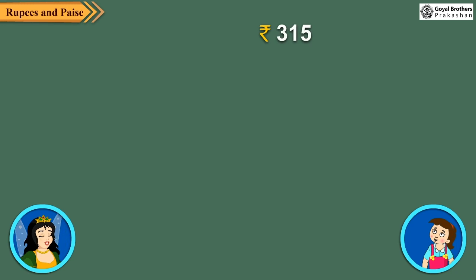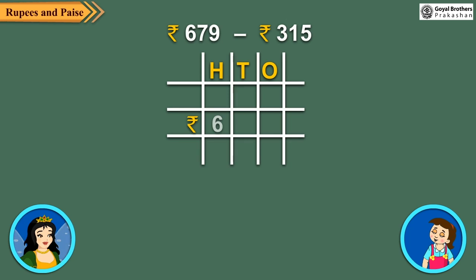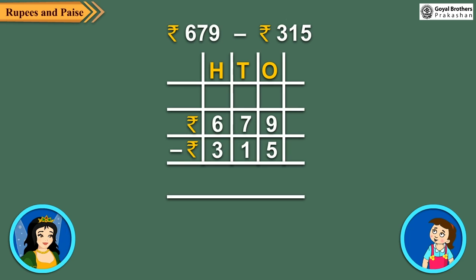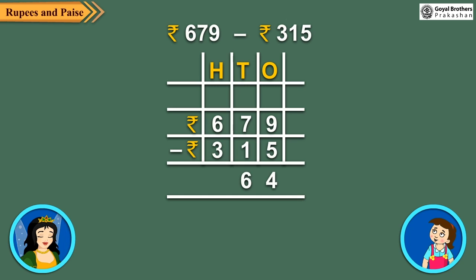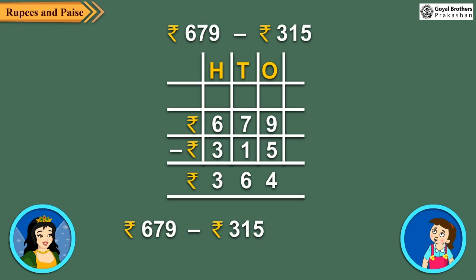Now let us subtract Rs.315 from Rs.679. First, arrange the amounts in columns. 9 ones minus 5 ones is equal to 4 ones. Next, subtract the tens: 7 tens minus 1 ten is equal to 6 tens. Finally, subtract the hundreds: 6 hundreds minus 3 hundreds is equal to 3 hundreds. So, Rs.679 minus Rs.315 is equal to Rs.364.